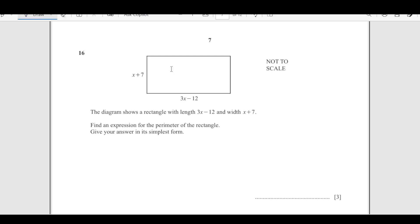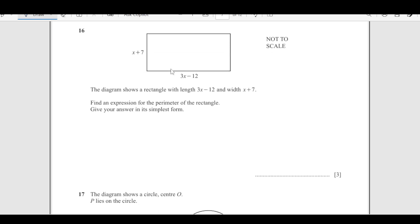So now let us start, number 16, we have this diagram. The diagram shows a rectangle with length 3x - 12 and width x + 7. Find an expression for the perimeter of the rectangle. What is perimeter? Perimeter is sum of the length of all the sides. So if this is x + 7, this side is also x + 7 and this is going to be 3x minus 12.